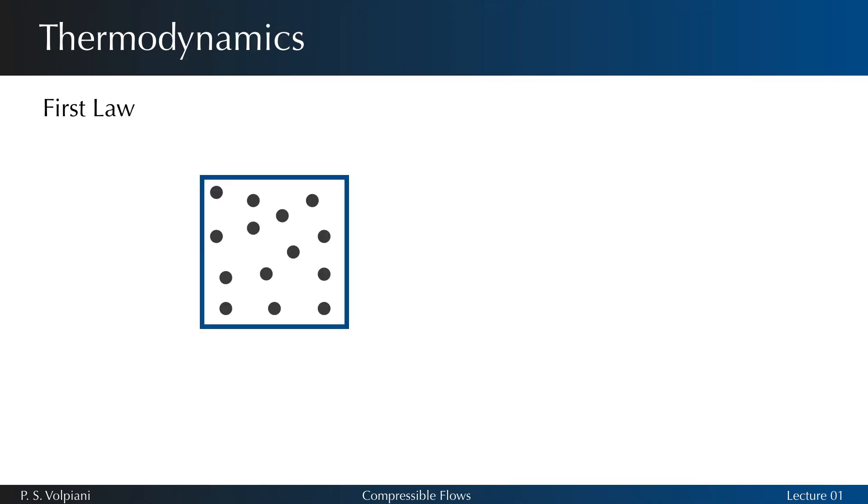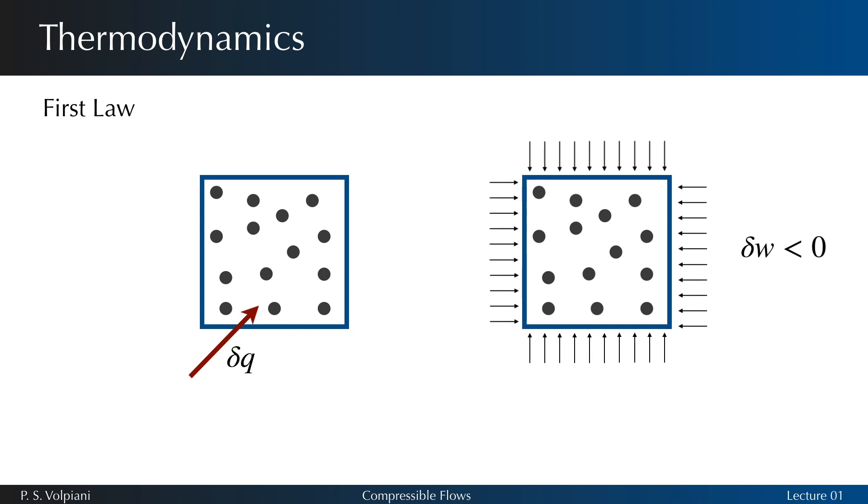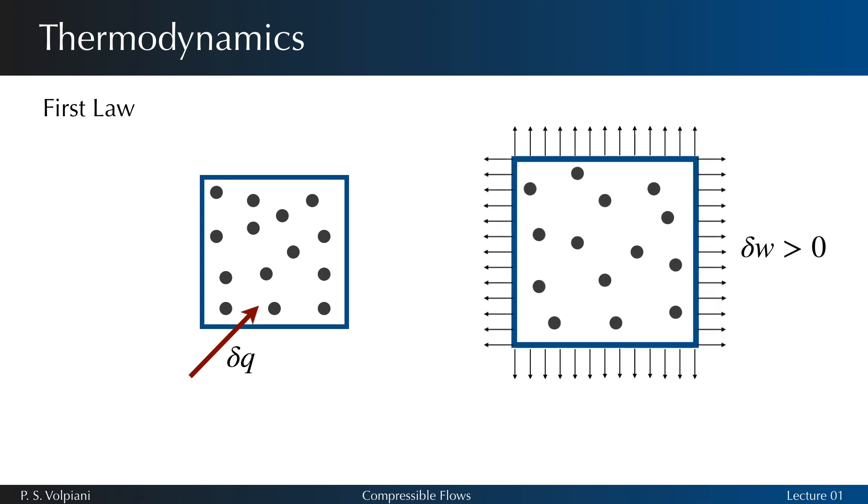The first law of thermodynamics tells that in a stationary system, the only means by which the internal energy can be increased are the following: one, by adding heat to the system—this heat comes from the surroundings and is added to the system across the boundary. Let δQ be an incremental amount of heat added per unit mass. Or two, through work done on the system. This work can be manifested by the boundary of the system being pushed out, work done by the system, or pushed in, work done on the system. Let δW be an incremental amount of work done by the system per unit mass.